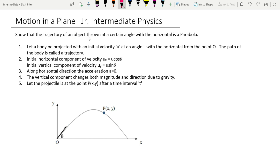We have to show that the trajectory of an object thrown at a certain angle with the horizontal is a parabola. If an object is thrown at an angle other than 90 degrees with the horizontal, the path must be parabolic. Let a body be projected with an initial velocity u at an angle theta with the horizontal from a point O. The path of the body is called the trajectory.